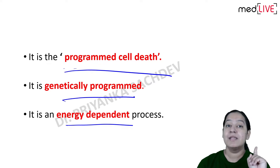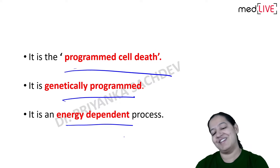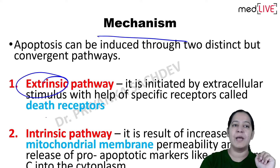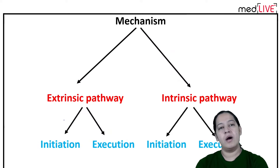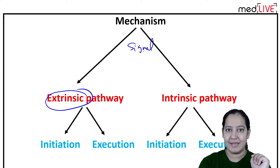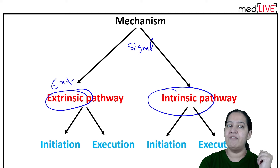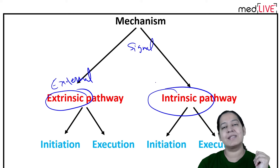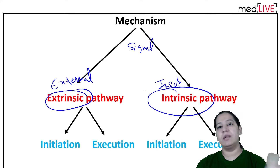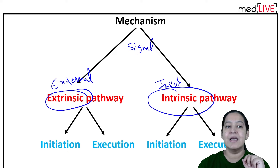Apoptosis is a programmed cell death, it is genetically programmed and it is energy dependent - the cell requires ATP. Before dying, the cell also has to invest energy. Now coming to the mechanism of apoptosis, there are two pathways: extrinsic pathway and intrinsic pathway. In extrinsic, the signal for dying comes from external. In intrinsic, the signal comes from inside the cell - from DNA.